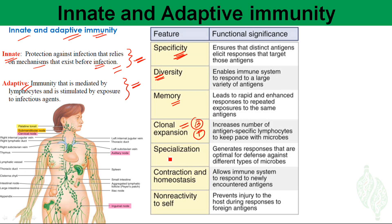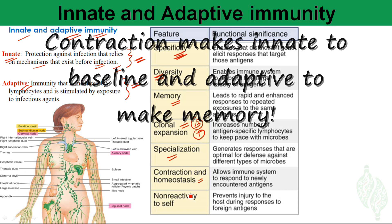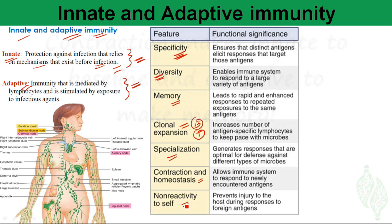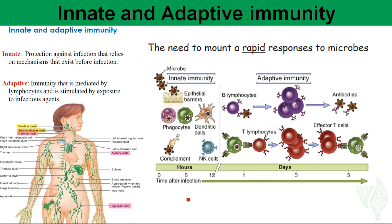Specialization is less effective for the innate immune system but more effective for the adaptive immune system. Both systems contract after clearance of bacteria and viruses. The innate immune system is less self-reactive, while the adaptive immune system is more self-reactive — which is why most immune disorders and autoimmune diseases are related to the adaptive immune system.